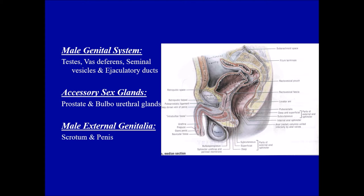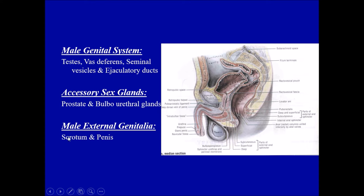The male external genitalia, which are seen from outside, consist of the penis — the main copulatory organ in males — and the scrotum, the bag which contains the testes. So the main reproductive system consists of the male genital system with the testes, vas deferens, seminal vesicles, and ejaculatory duct; the accessory glands being the prostate and bulbourethral gland; and the male external genitalia which consists of the penis and scrotum.